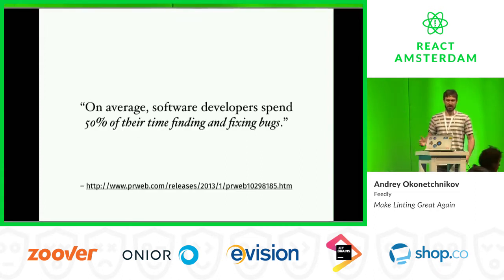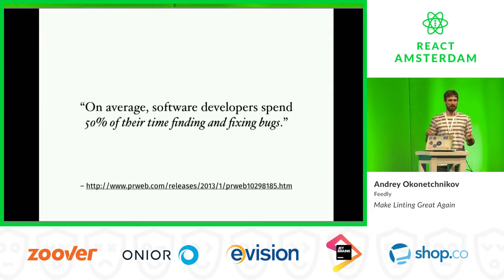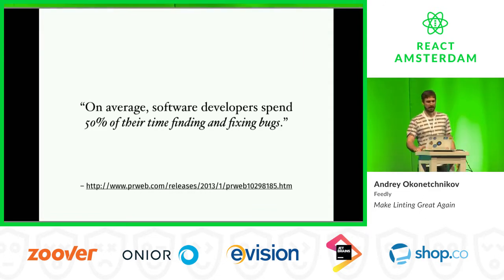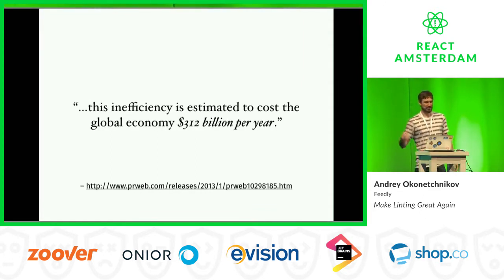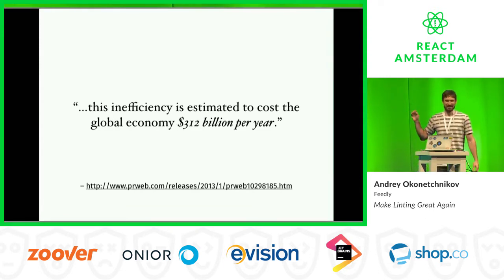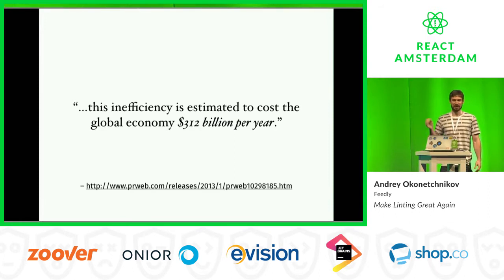As it turns out, on average software developers spend 50% of their time finding and fixing bugs. This inefficiency — it's an estimated cost, but it's a huge number: 312 billion dollars a year.